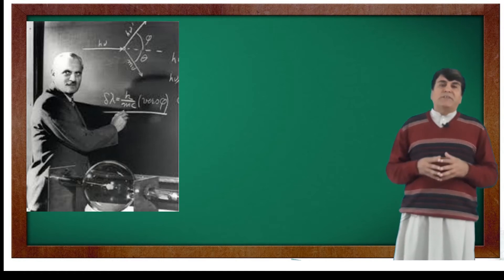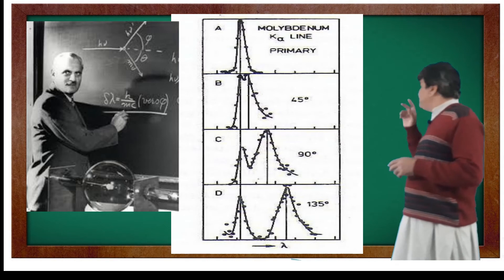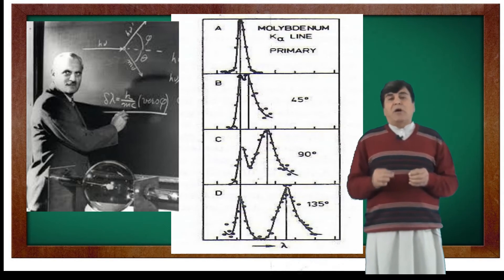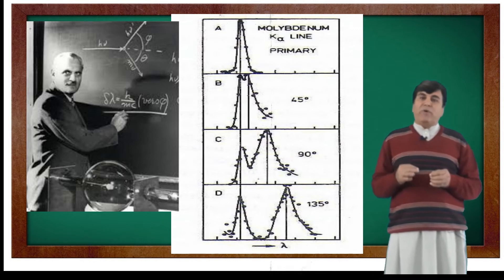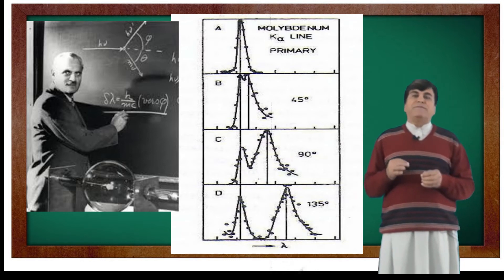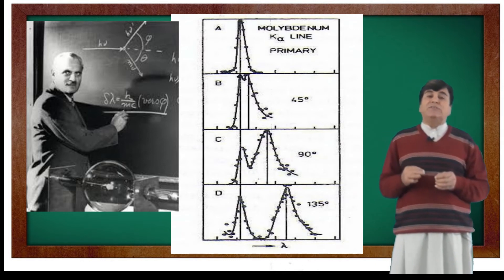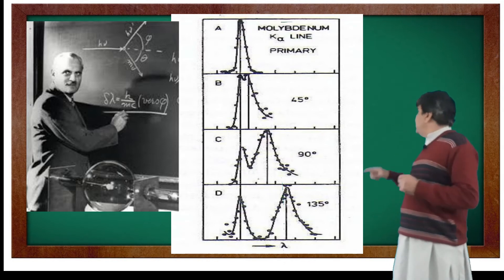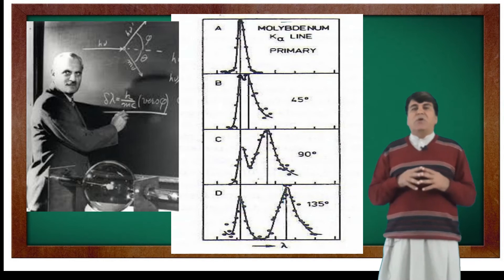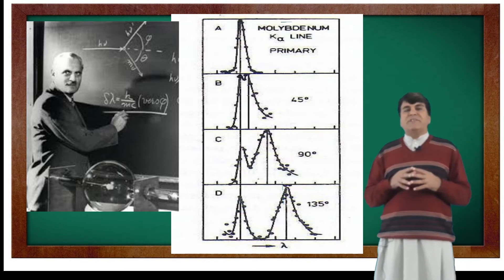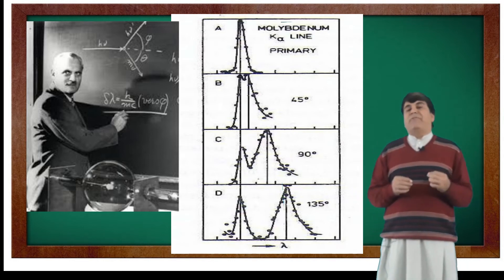The output of Compton's experiments is shown in the figure. This is the original figure from Compton's paper published in Physical Review, volume 21, page 483, in 1923. We see only one peak in figure A. This corresponds to the outgoing beam at an angle of 0 degrees to the direction of incident beam.